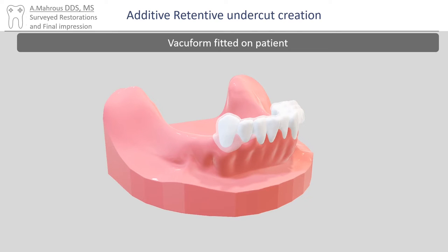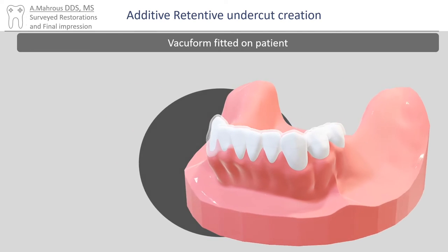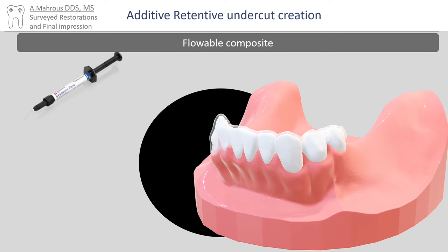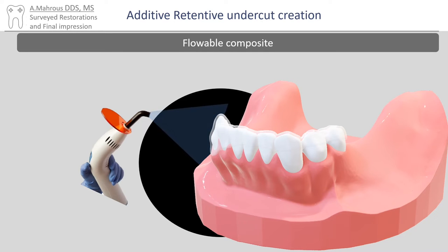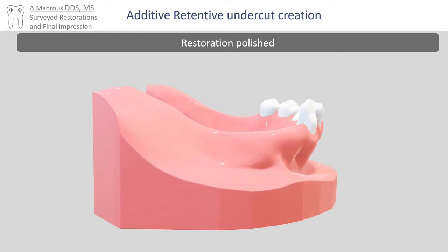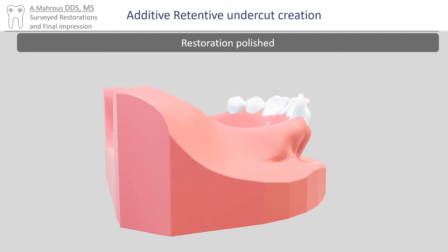During the patient appointment, the vacuform matrix is inserted and full seating is verified. A flowable composite is then inserted in the cavity between the vacuform and the tooth, and the composite is cured. The vacuform is then removed and the composite is polished. Notice how an undercut is now created.